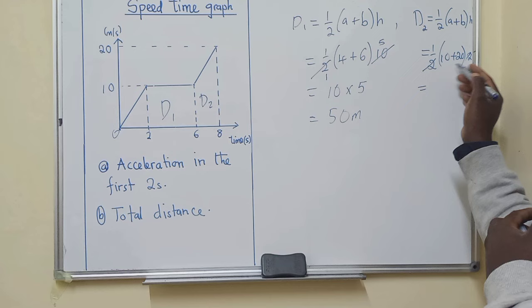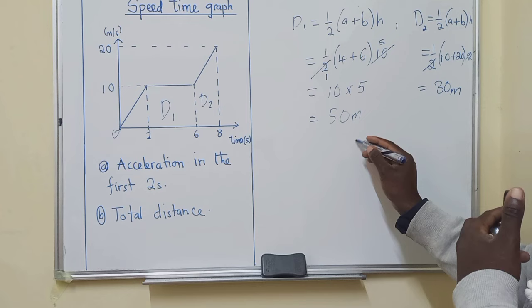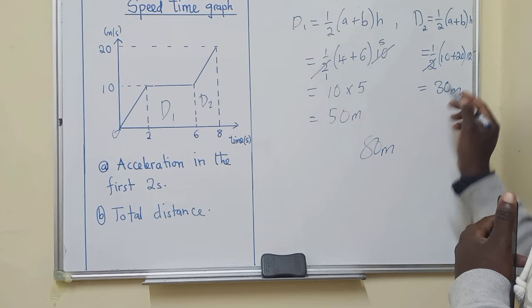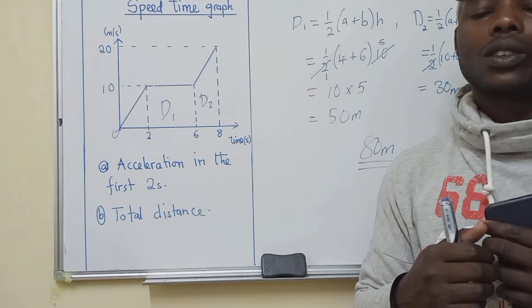Here we're getting 30, so it's 30 meters. So distance two is 30 meters. Now to show the total distance we need to add these two which will give us 80 meters, because 50 plus 30 is 80 meters. Thank you so much. Don't forget to like, comment, subscribe and advise if you can.